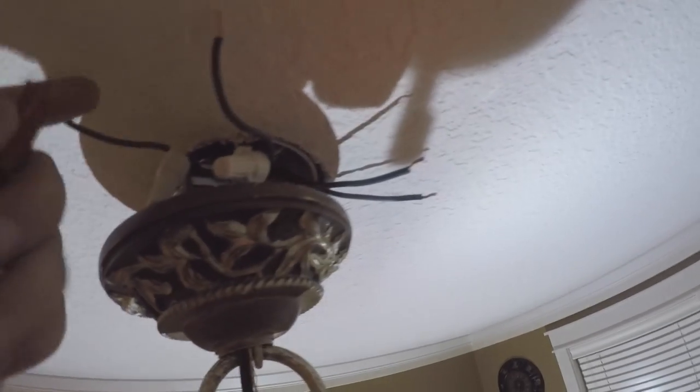The last step is twist the two wires together and use the electrical cap to make the connection together. Simply twist the wires together and then use the electrical cap and screw it in place. Perfect.